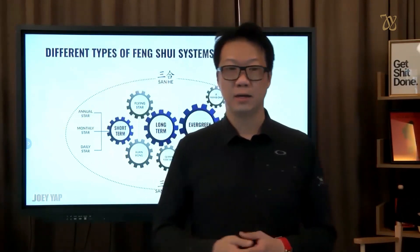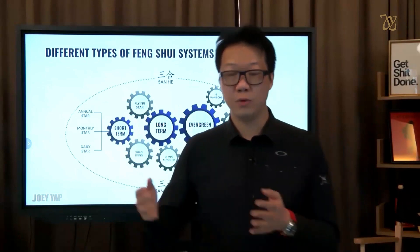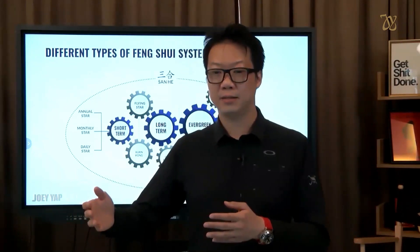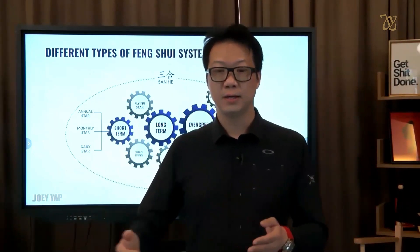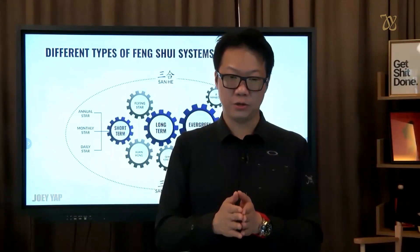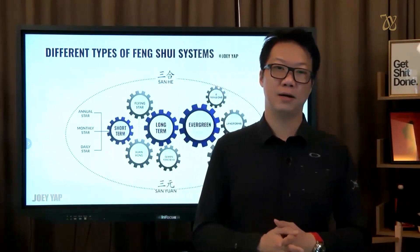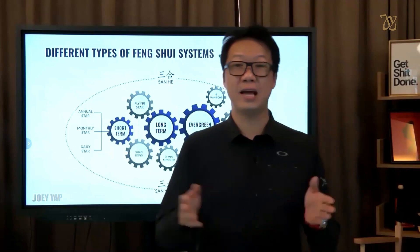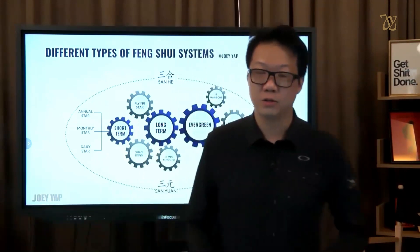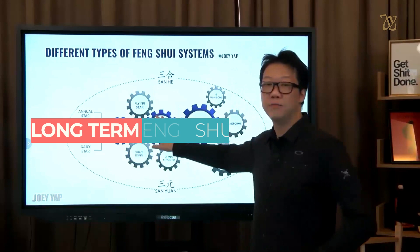Now there are cycles — I will explain there are different time systems. Generally, the shortest available cycle is 18 years and the longest is 27 years. So those are called long-term feng shui.